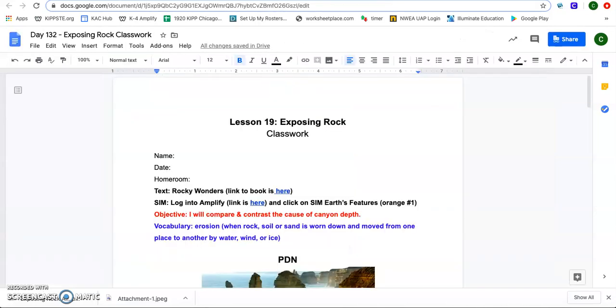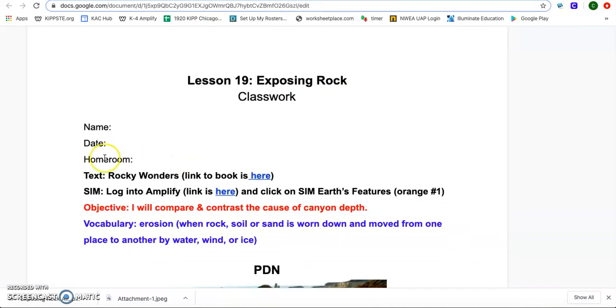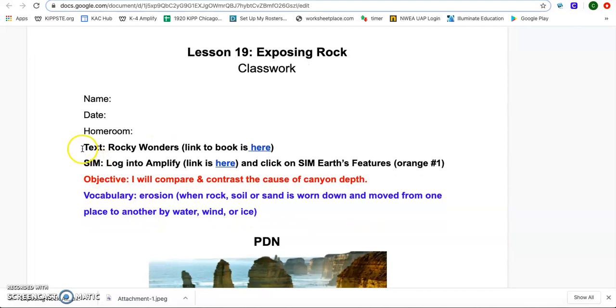Before we get into that, I do want to quickly go over our heading and our classwork. In our heading, you're always going to have your resources. So you have your text. You can click here for your book. You're going to do a sim today, so that link is here. You also have directions and we'll go over that later in today's lesson. Our objective for today: I will compare and contrast the cause of canyon depth. And when we think about the depth, we're thinking about the deepness of that canyon. Here's our vocabulary word again. It is always there, following you around.